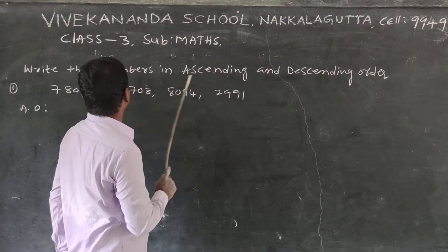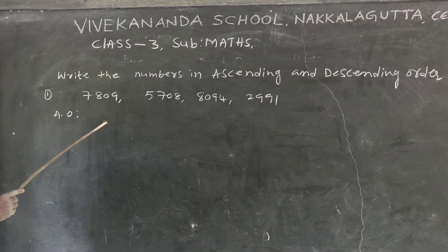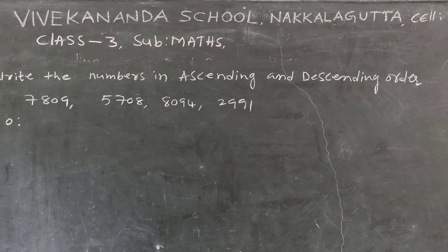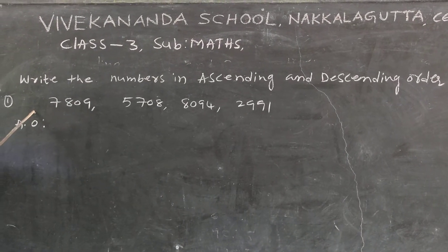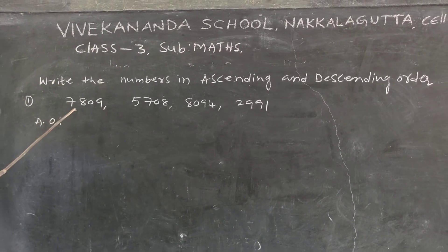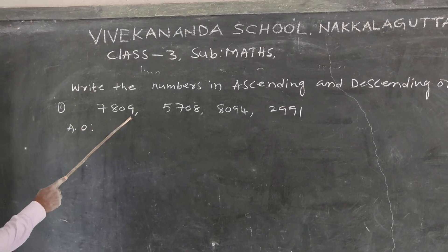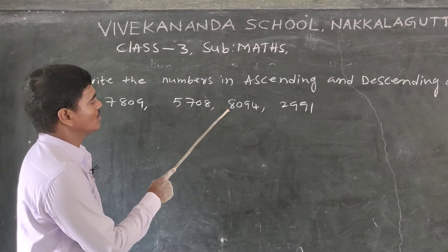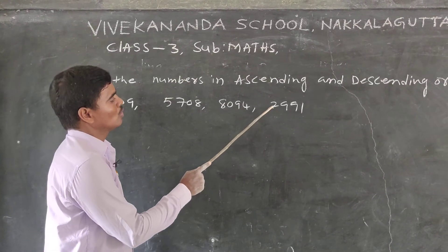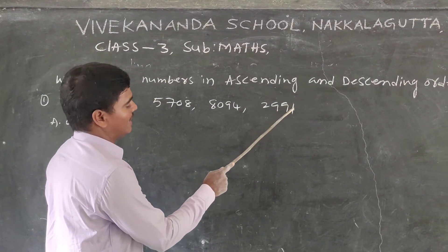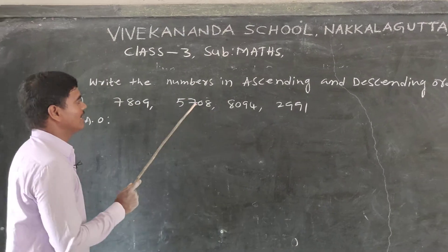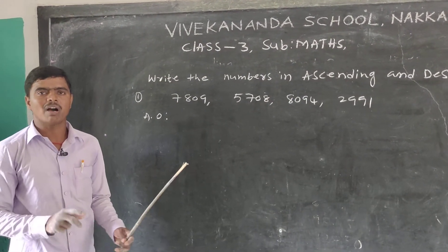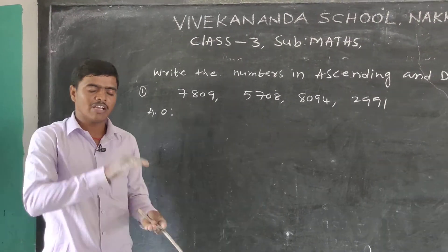One more example. Read the numbers: 7809, 5708, 8094, 2991. First, arrange these numbers in ascending order. What is ascending order? Small to big.